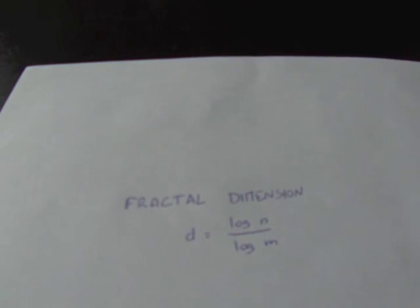Where n is the number of parts obtained after iteration, and m is the homothetic ratio, so it's in how many parts we divide the initial part.